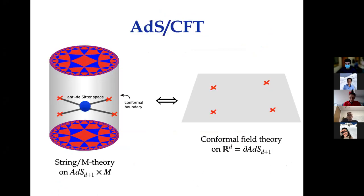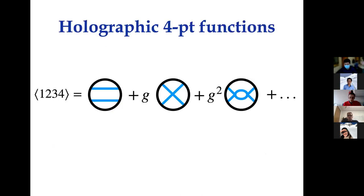The basic setup is AdS/CFT, which is very well known to relate string theory or M-theory on AdS_{d+1} times some compact manifold M backgrounds to conformal field theories living on the conformal boundary of AdS. The main observable we're considering in this setup is holographic four-point functions — correlators between boundary excitations in AdS that are dual to actual correlators in the CFT.